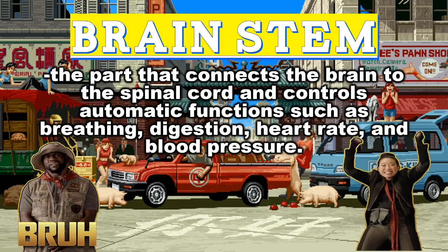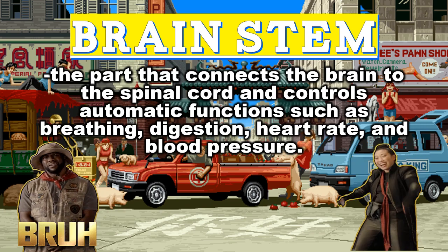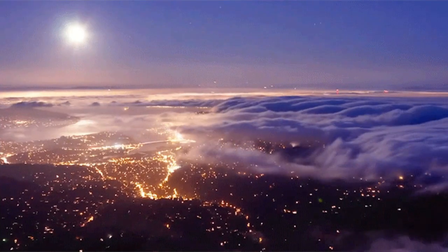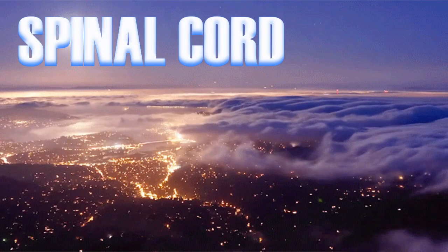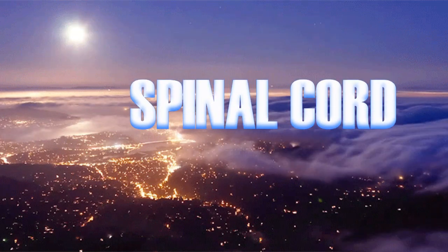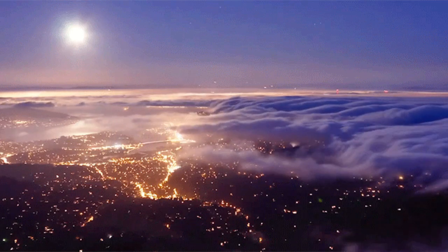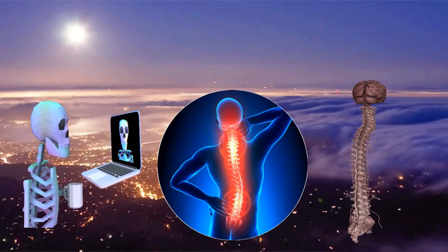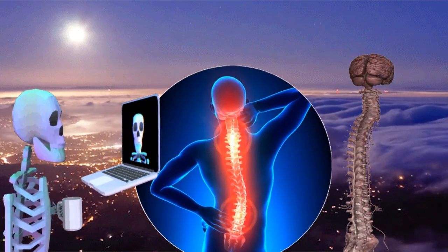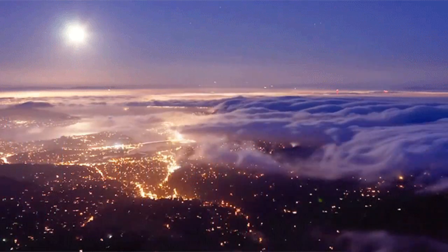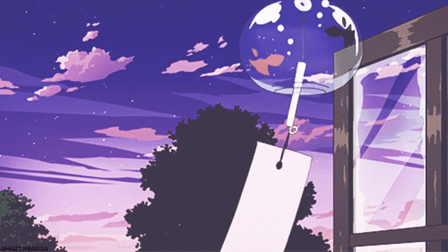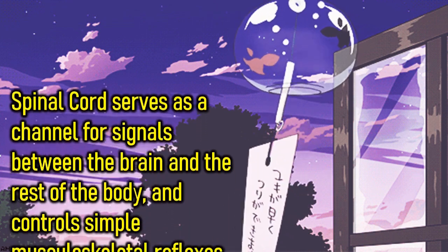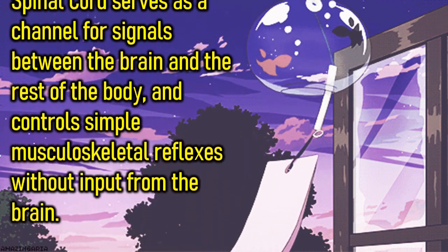The brainstem connects the brain to the spinal cord and controls automatic functions such as breathing, digestion, heart rate, and blood pressure. The spinal cord serves as a channel for signals between the brain and the rest of the body, and controls simple musculoskeletal reflexes without input from the brain.